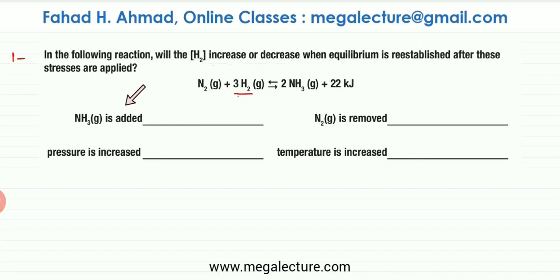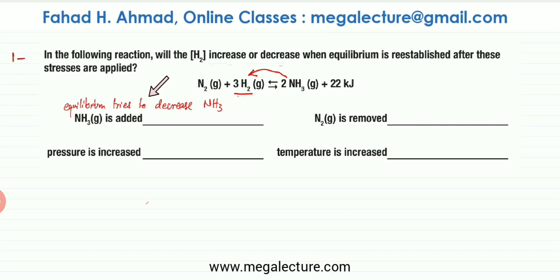If there is more NH3, the equilibrium will try to decrease NH3. The backward reaction is going to be favored because in the backward reaction, NH3 would be converted back into N2 and H2. So if you add more NH3, equilibrium tries to decrease NH3 by favoring the backward reaction. If the backward reaction is favored, the quantity of H2 is going to be increasing. So H2 increases.